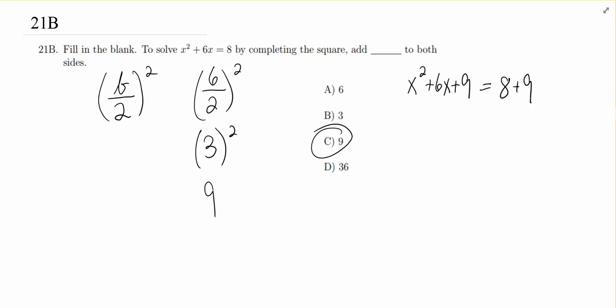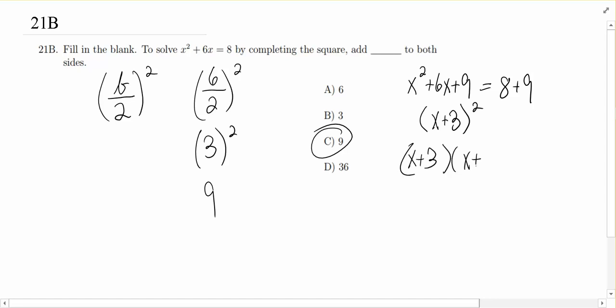So you could ask yourself, does this in fact factor as a perfect square? If I do x plus 3 times x plus 3, do I in fact get x squared plus 6x plus 9? And so if I foiled this out, I will see that I do in fact get back to x squared plus 6x plus 9.